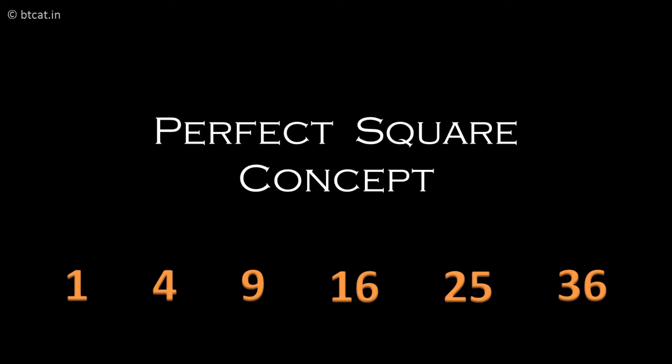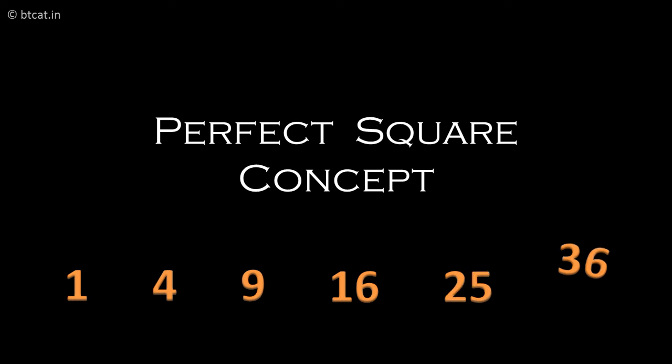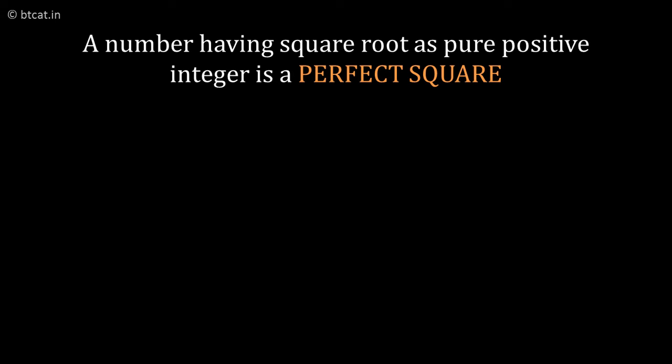The perfect square concept: what is a square number? For example, 1, 4, 9, 16, 25, 36 — all these are perfect square numbers, which have a square root that is a pure positive integer.